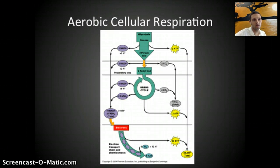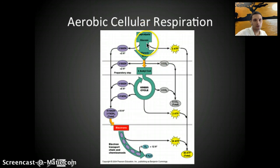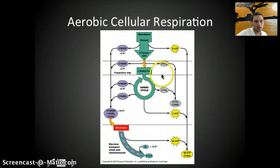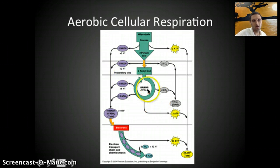Looking at all of the components of aerobic cellular respiration as a whole, we've previously talked about glycolysis — that's the conversion of glucose into a little bit of ATP and, more specifically, pyruvate or pyruvic acid. The second step we're going to look at today is the conversion of that pyruvate during the link reaction and then in the Krebs cycle.